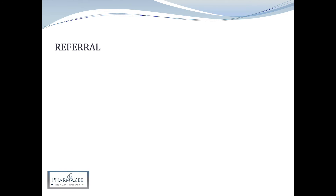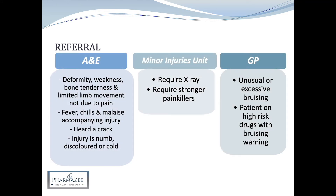Moving on to referral and danger symptoms to look out for. Immediate action is required — referring a patient to A&E or calling 999 — if they have unexplained deformity, weakness, bone tenderness, or limited limb movement not due to pain alone. If a patient has fever, chills and malaise accompanying the injury, this also requires immediate referral to A&E as they may have an underlying infection. If the patient heard a crack during the injury they may have a broken bone, and if the injury is numb, discoloured or cold to touch.